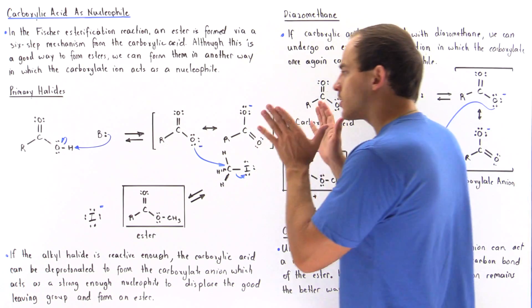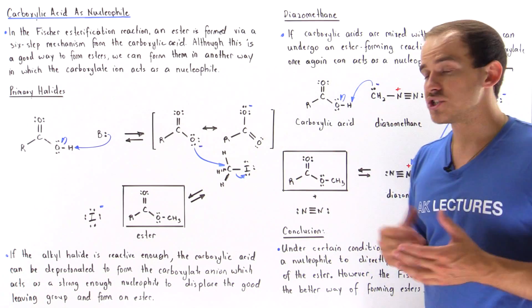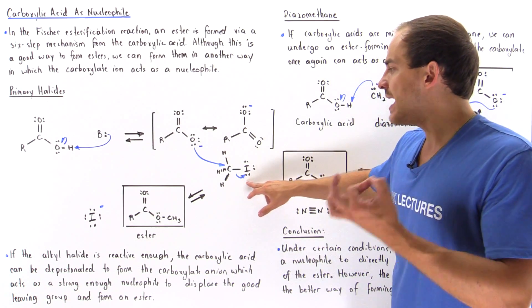Now if we take the carboxylate ion and mix it with a primary halide, such as, for example, a methyl halide...